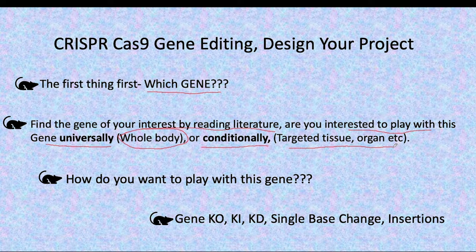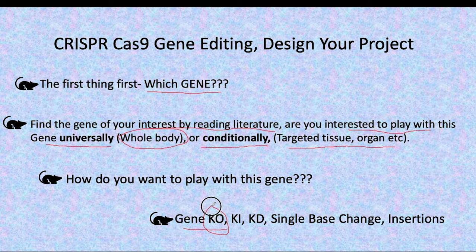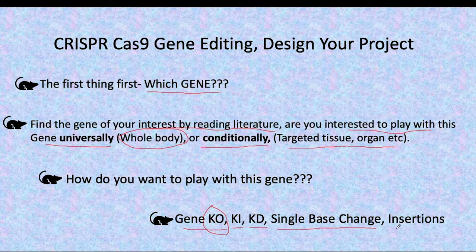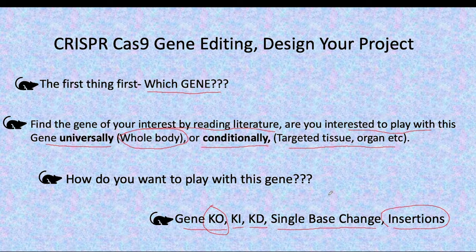After deciding all these things, the next important question is how do you want to work with this gene. You can make a knockout — delete this gene from that organism. You can knock in the gene, meaning you want to overexpress it. Or you can knock down the gene, down-regulating its expression. Or you may want to make a single base change or some insertion.